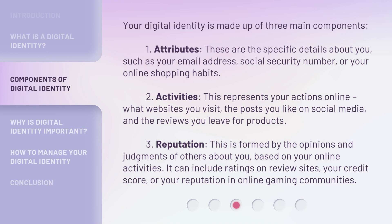Your digital identity is made up of three main components. One: attributes. These are the specific details about you, such as your email address, social security number, or your online shopping habits. Two: activities. This represents your actions online — what websites you visit, the posts you like on social media, and the reviews you leave for products.